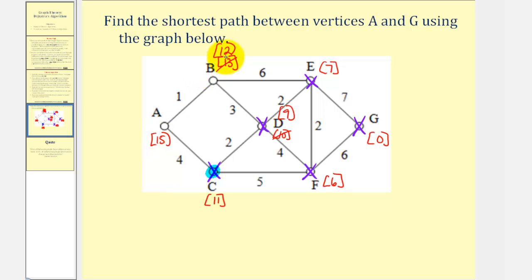And since twelve is less than fifteen, vertex B is now current. And only vertex A leads to B, and since twelve plus one is thirteen, which is less than fifteen, we replace fifteen with thirteen, giving us our shortest path.